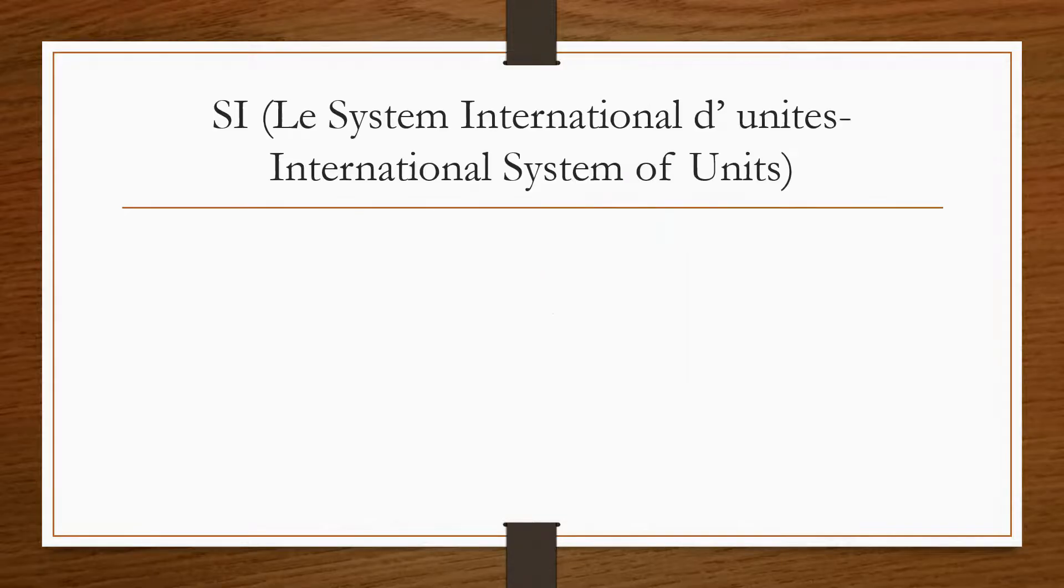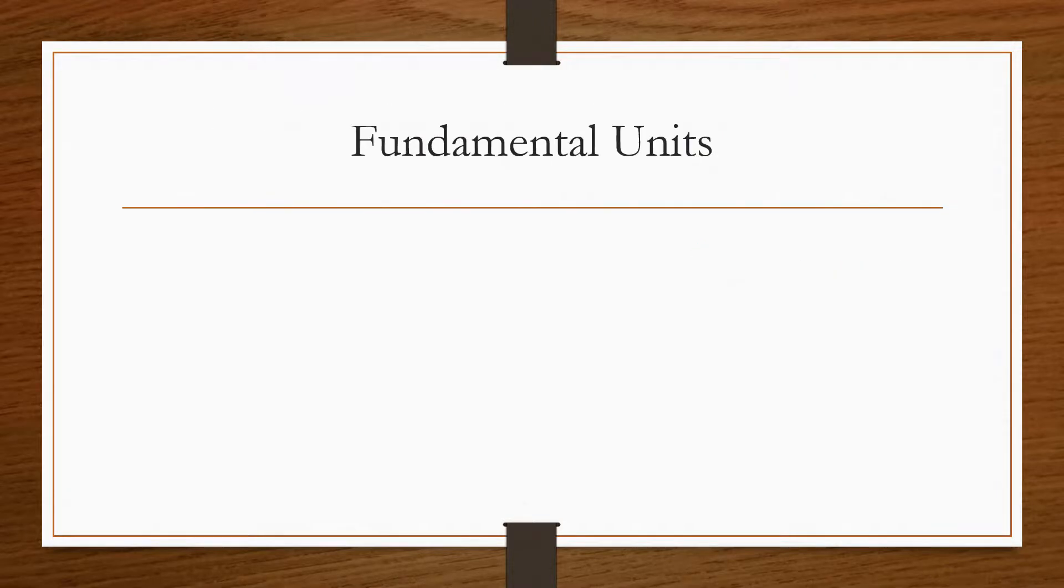Now the SI system, that is the International System of Units. Now this system is basically the modified form of MKS system, and it is also known as rationalized MKS system. So there are seven fundamental units and two supplementary units. I have already discussed in my last lecture.